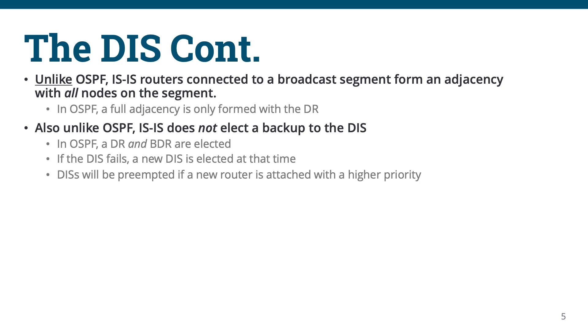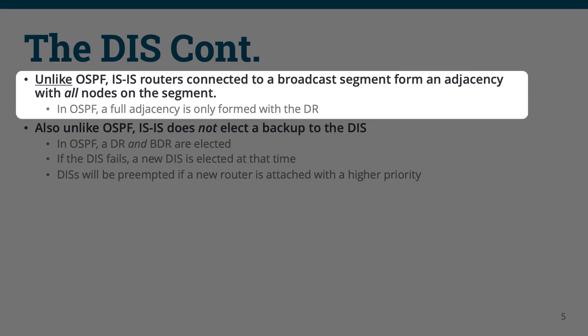A key difference between OSPF and ISIS, however, is that on a broadcast segment, all intermediate systems will form a full adjacency with all other intermediate systems on the broadcast segment. This means all nodes on the broadcast segment will exchange CSNPs, PSNPs, and LSPs with each other. The DIS still represents the broadcast segment as a pseudo-node, though.